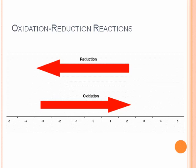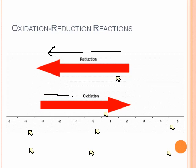Looking at these reactions, reduction involves moving from more positive to less positive, or more negative. Oxidation involves moving from more negative to less negative, or more positive. Movement in the negative direction represents reduction; movement in the positive direction represents oxidation.